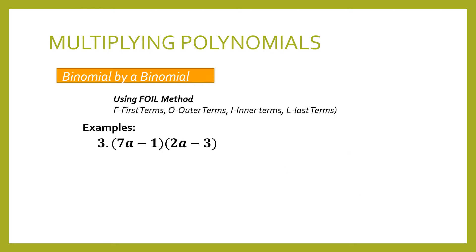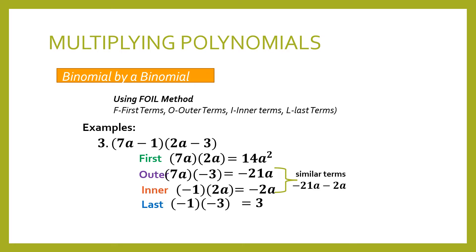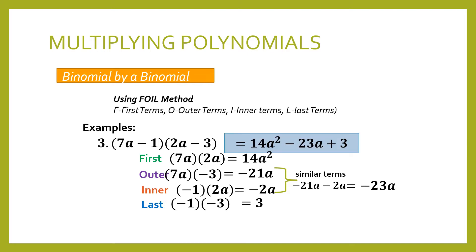Here is our third example. We multiply 7a minus 1 times 2a minus 3. We list down our first, outer, inner, and last terms, then multiply. We combine like terms: negative 21a minus 2a is equal to negative 23a. So our final answer is 14a squared minus 23a plus 3.